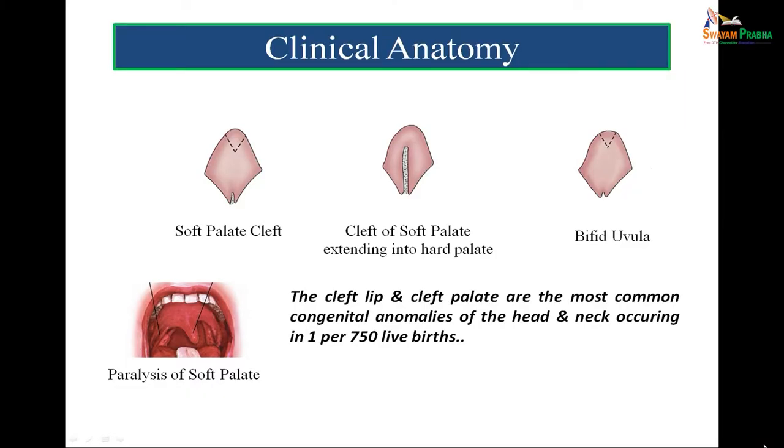For example, in a 7th nerve lesion when a person smiles, the angle of the mouth is deviated towards the normal side. For the 10th nerve damage, when the person opens the mouth, the soft palate will be deviated towards the normal side. So for 10th nerve lesion and 7th nerve lesion, deviations will be towards the normal side. For the 12th nerve lesion, when the person protrudes the tongue, the deviation will be towards the side of paralysis. For the 5th nerve, when the person opens the mouth, the jaw will deviate towards the paralyzed side.